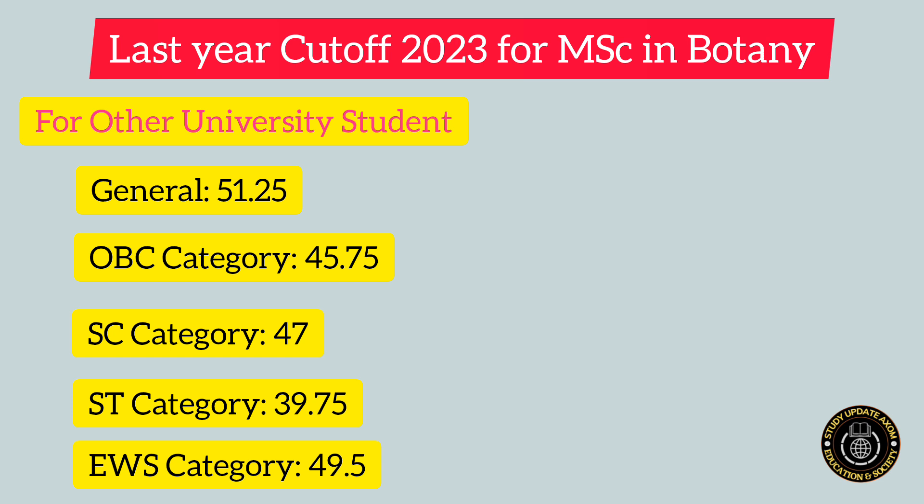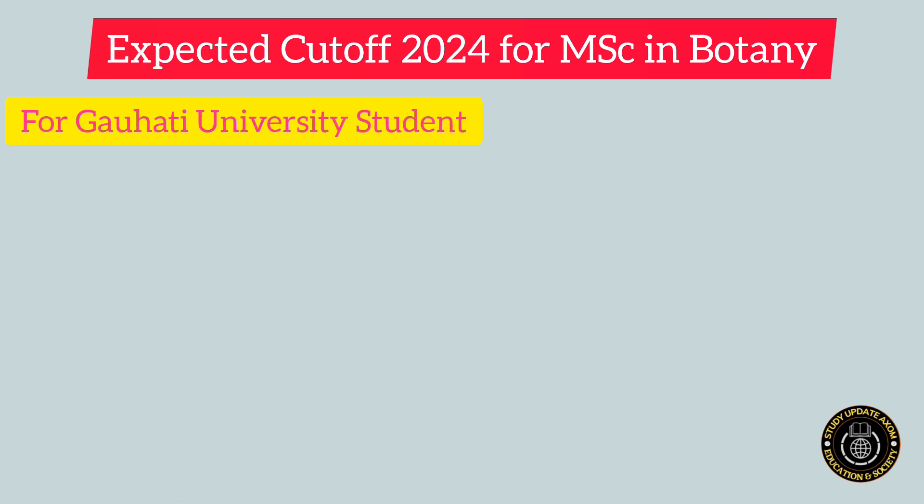Other university students means those who completed their graduations from universities or colleges other than Gauhati University or its affiliations. For General category, the cutoff was 51.25. For OBC category, the cutoff was 45.75. For SC category, the cutoff was 47. For ST category, the cutoff was 39.75. For students who belong to EWS category, the cutoff was 49.5.